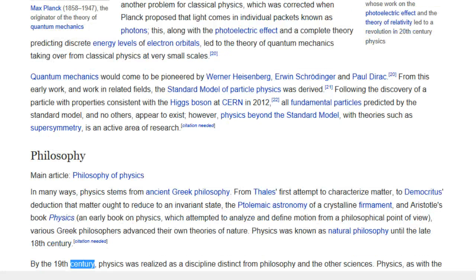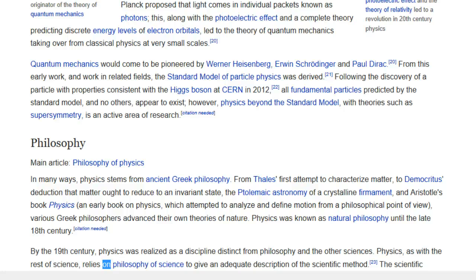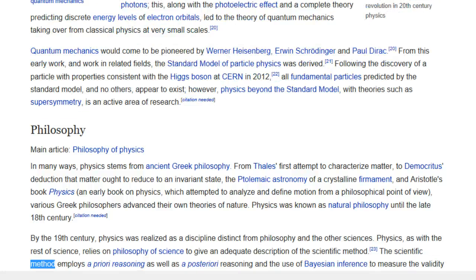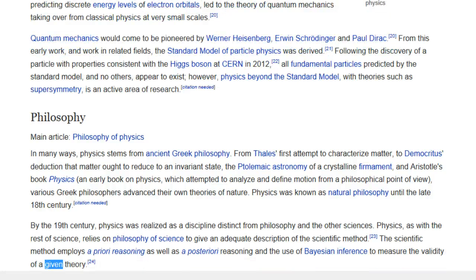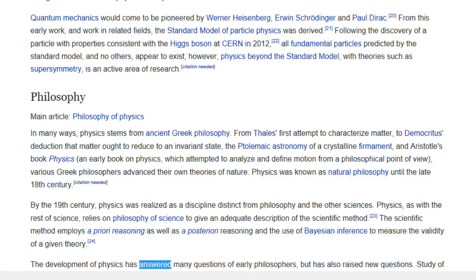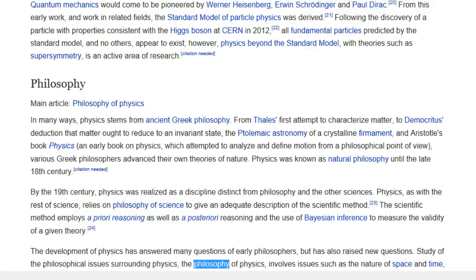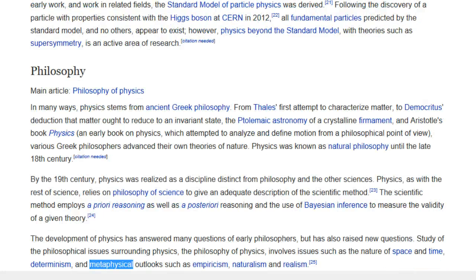Physics was known as natural philosophy until the late 18th century. By the 19th century, physics was realized as a discipline distinct from philosophy and the other sciences. Physics, as with the rest of science, relies on philosophy of science to give an adequate description of the scientific method. The scientific method employs a priori reasoning as well as a posteriori reasoning and the use of Bayesian inference to measure the validity of a given theory.